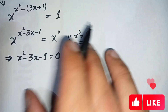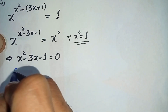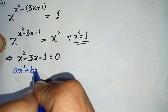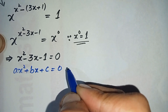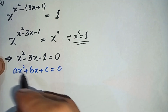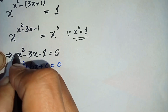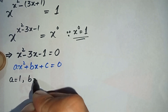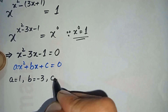This is a quadratic equation of the form ax² plus bx plus c equals 0. Comparing both equations, we can write the values as: a equals 1, b equals minus 3, and c equals minus 1.